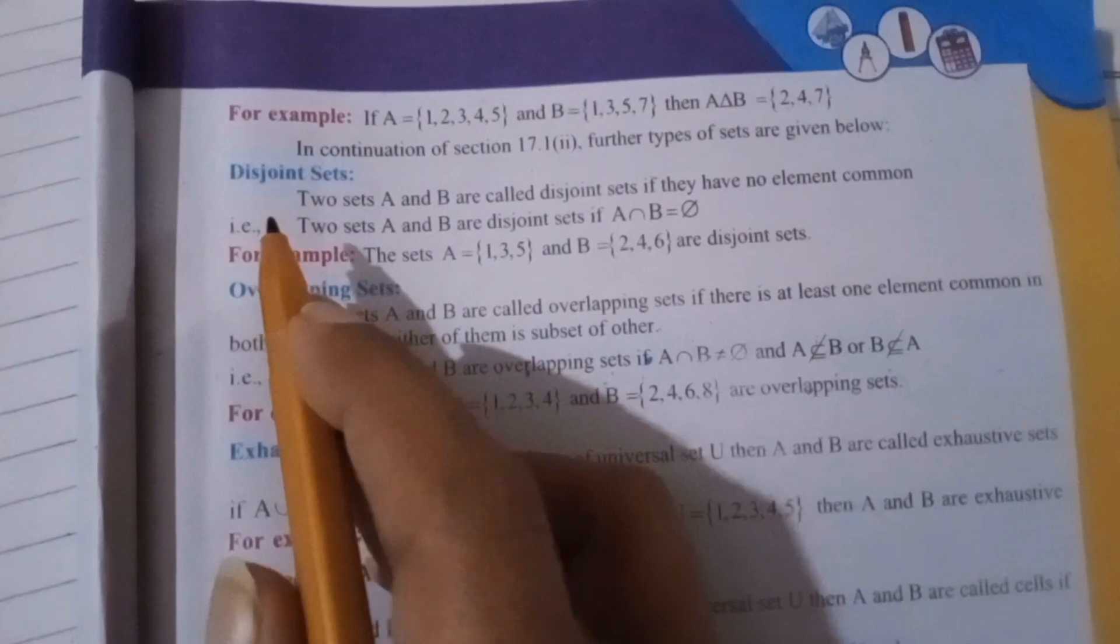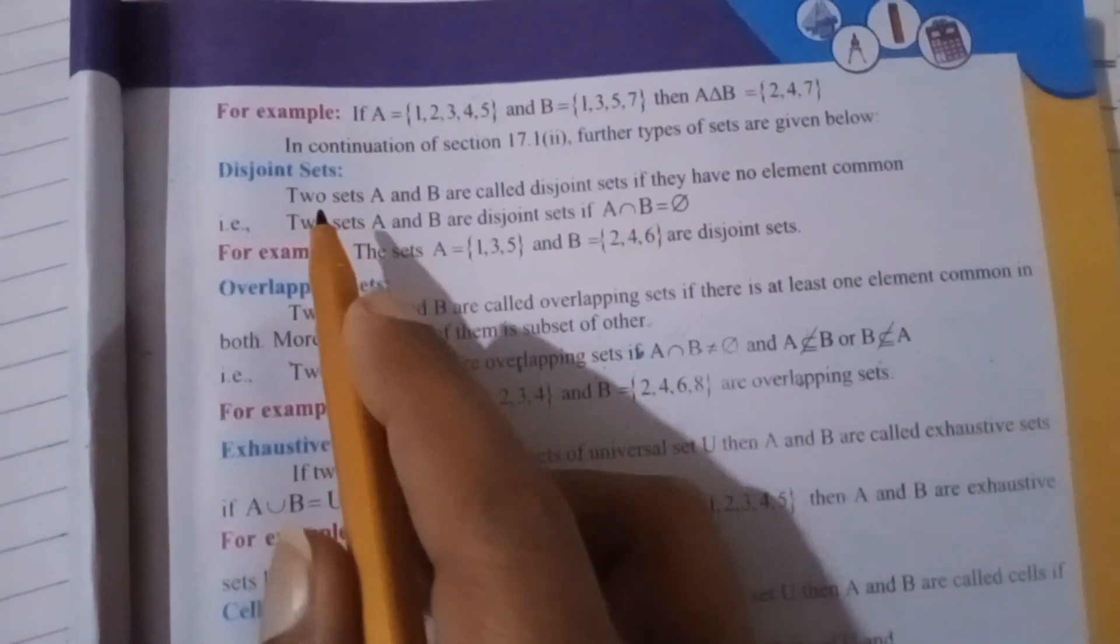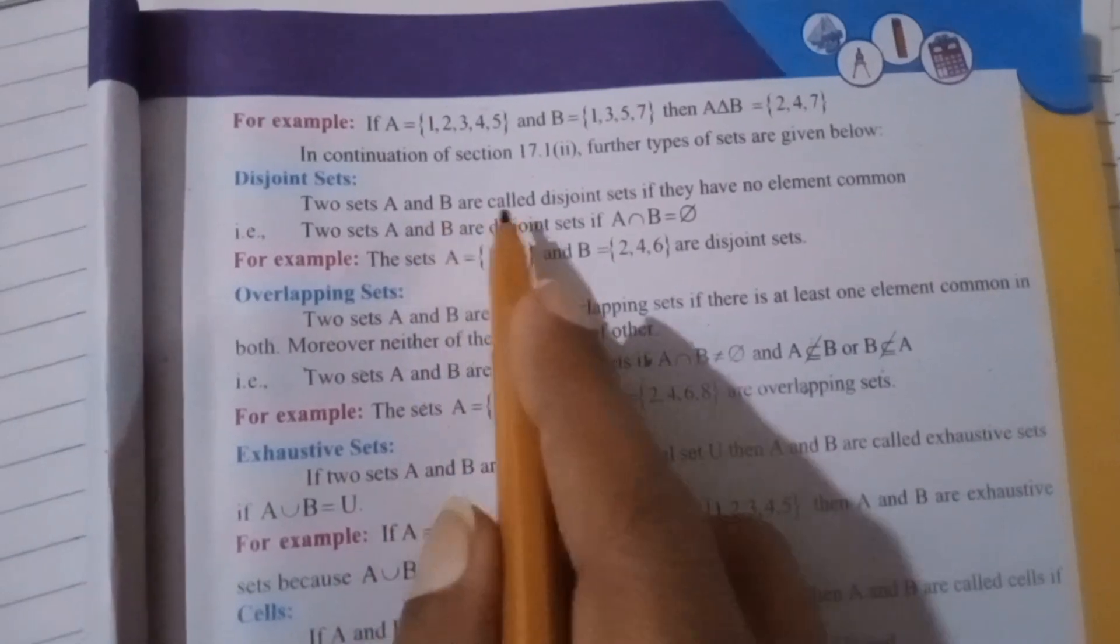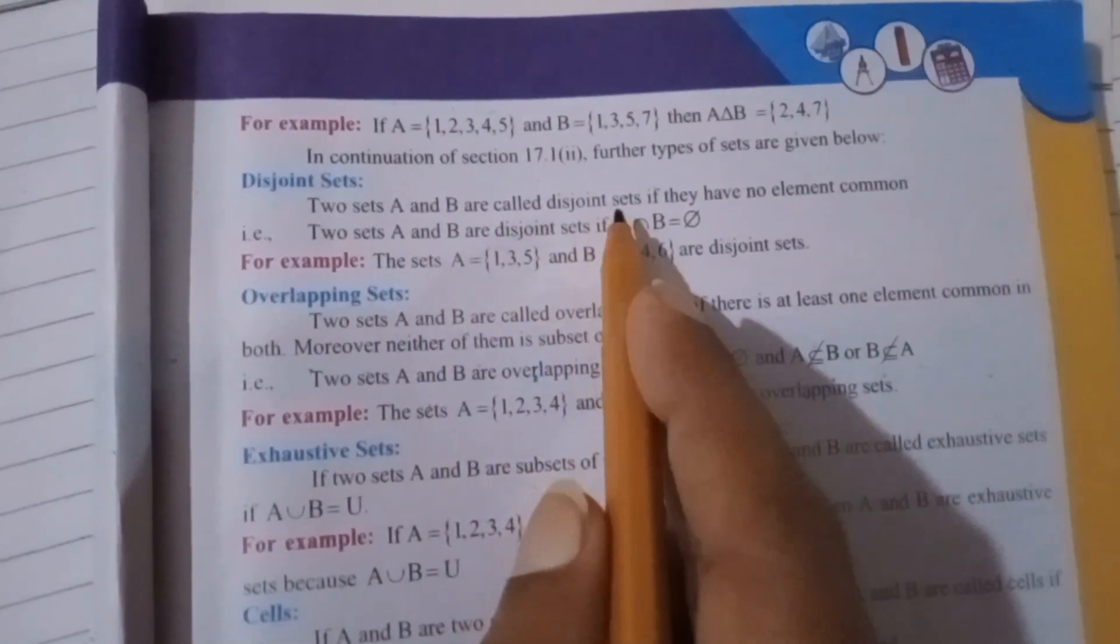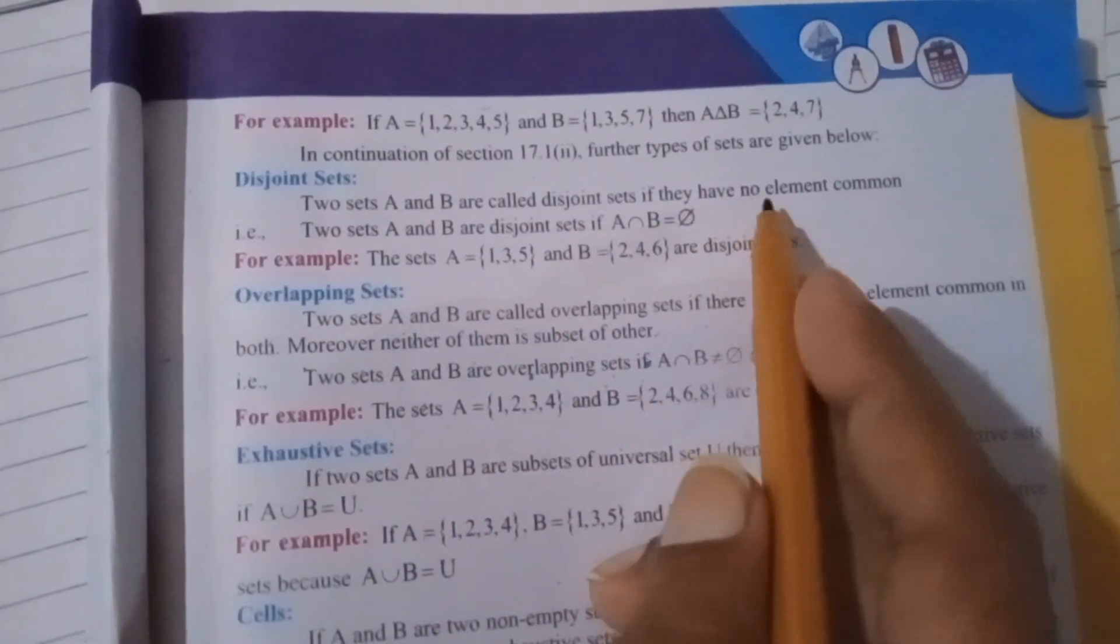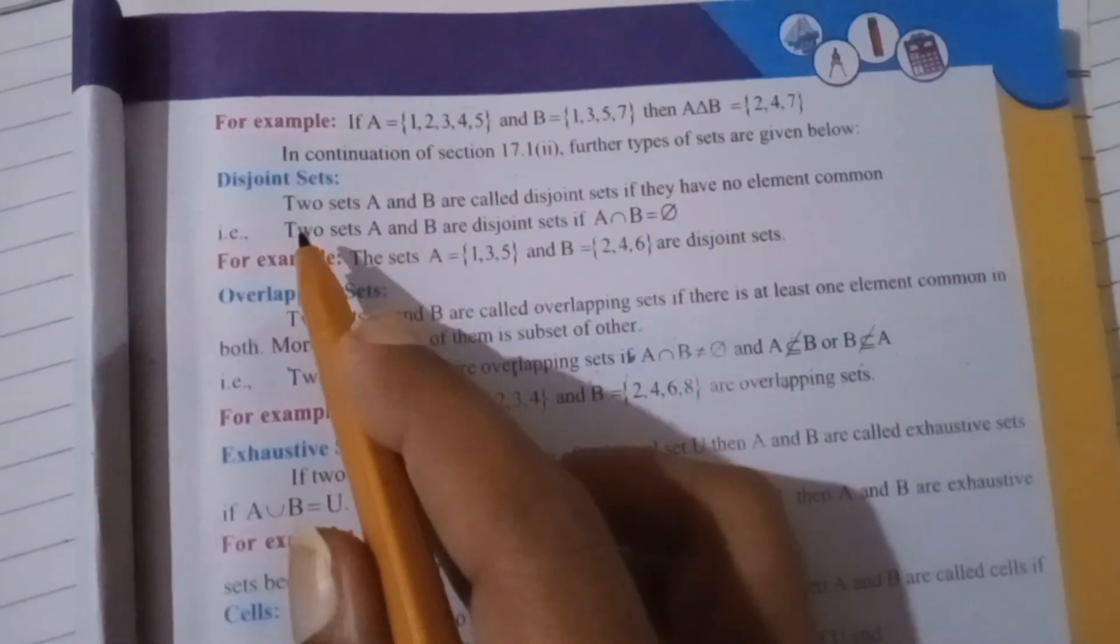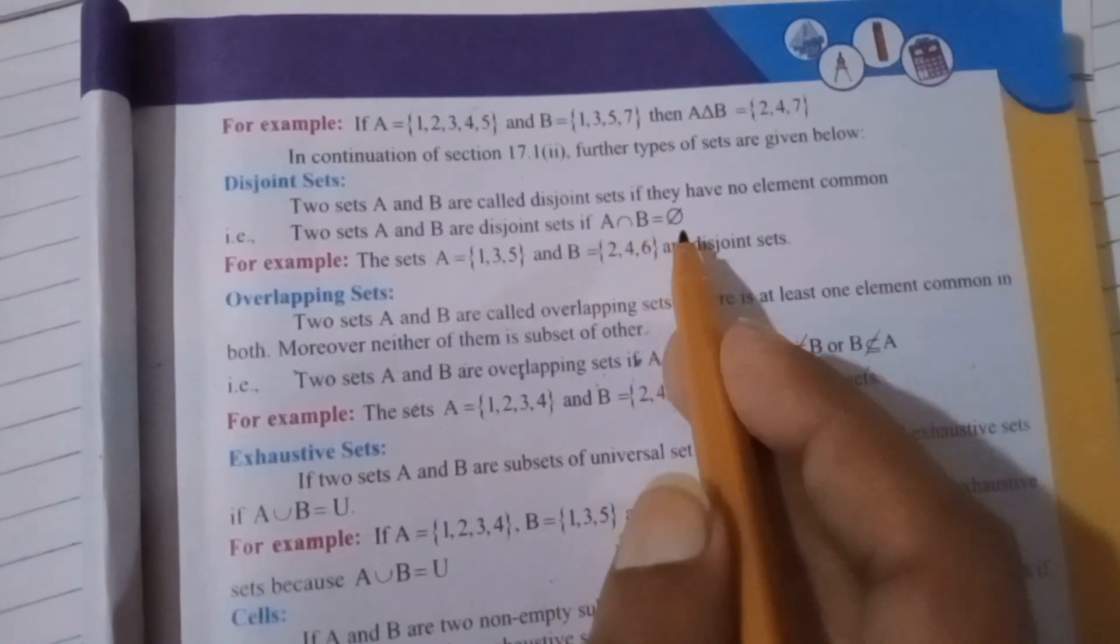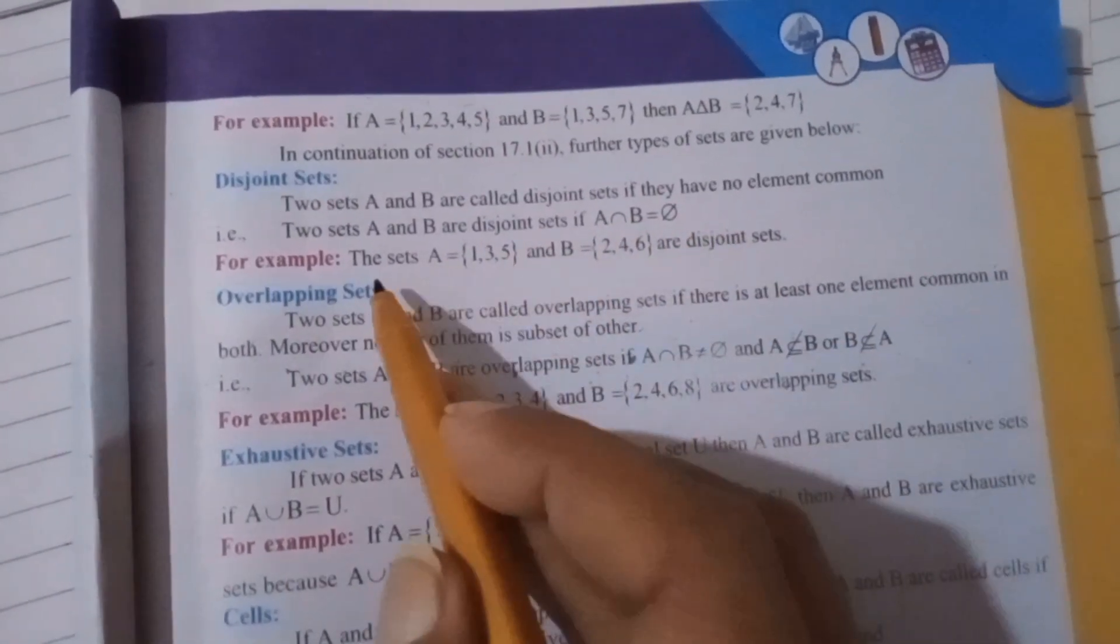First is disjoint sets. Two sets A and B are called disjoint sets if they have no element common. Two sets A and B are disjoint if A intersection B is equal to null set.